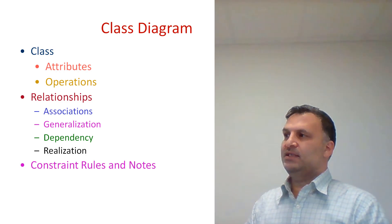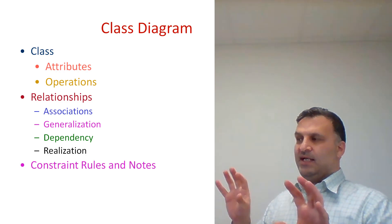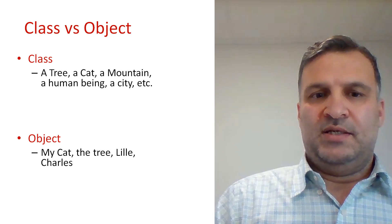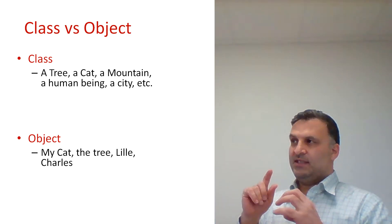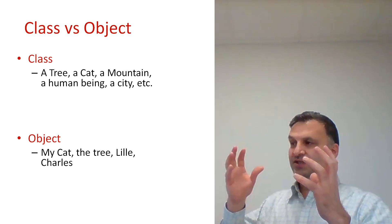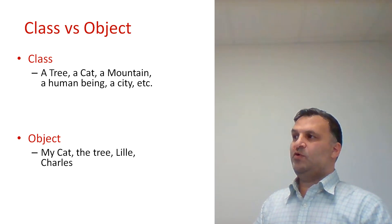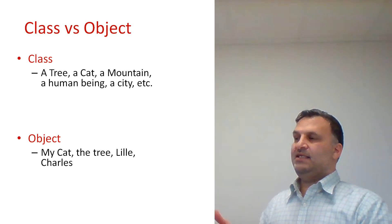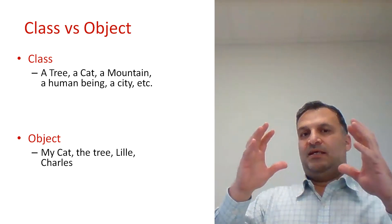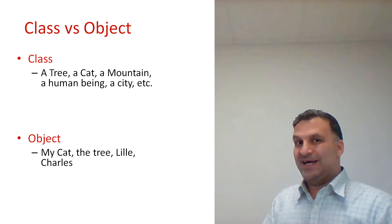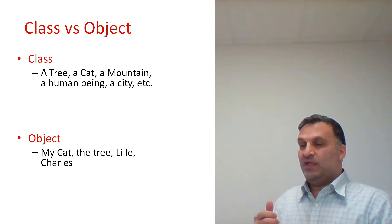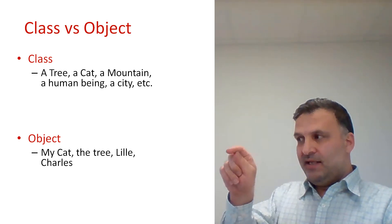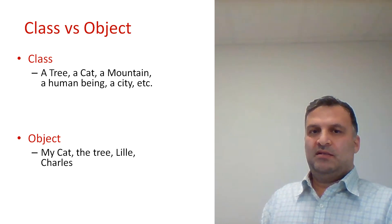In the class diagram, we will talk about attributes, operations, and relationships between classes. We should distinguish between two things: the class and the object. The class is a generalization — for example, we say a tree, a cat, a mountain, a human being, a city. When we talk about a specific realization, we talk about an object — my cat, this tree, Lille, Washington.